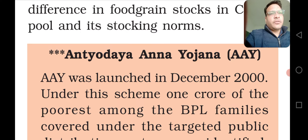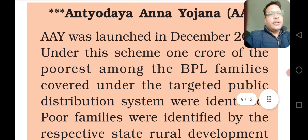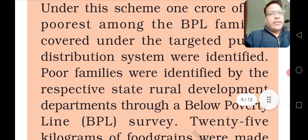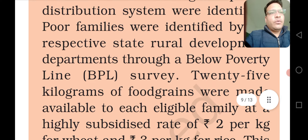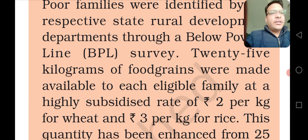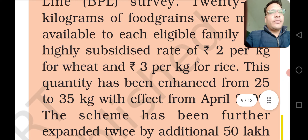Antyodaya Anna Yojana was launched in December 2000. Under this scheme, 1 crore of the poorest among the BPL families covered under the Targeted Public Distribution System were identified by the respective state rural development through a below poverty line survey. 25 kg of food were made available to each family at a highly subsidized rate of Rs. 2 per kg wheat and Rs. 3 per kg rice. This quantity has been enhanced from 25 to 35 kg with effect from April 2002.